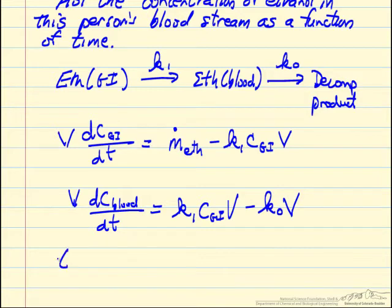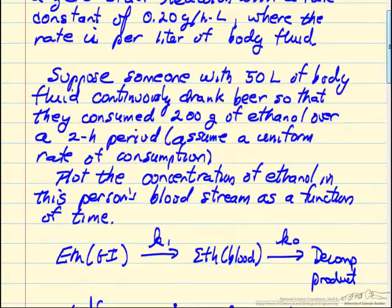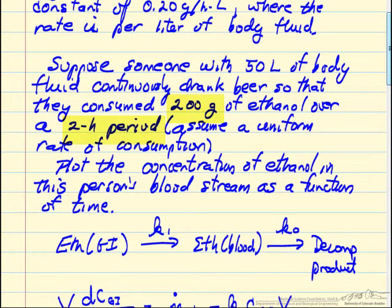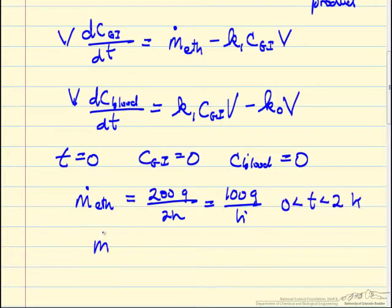We have as our initial conditions at the start, no ethanol has been consumed, so these two concentrations are zero. We need to do one more thing to complete the equations. This ethanol rate, namely the rate consuming 200 grams over a two hour period, means 200 grams in two hours, 100 grams per hour for time between zero and two hours. Then this ethanol rate is zero for time greater than two hours. We have to take this into account in solving the equations.